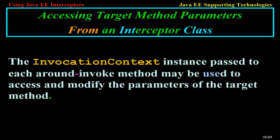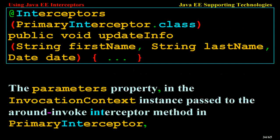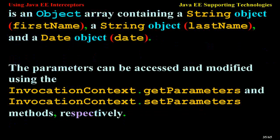Accessing target method parameters from an interceptor class: the invocation context instance passed to each AroundInvoke method may be used to access and modify the parameters of the target method. The parameters property of invocation context is an array of object instances corresponding to the parameter order of the target method. For example, for a target method with parameters String firstName, String lastName, and Date date, the parameters property is an object array containing those three objects. Parameters can be accessed and modified using invocationContext.getParameters() and invocationContext.setParameters() respectively.